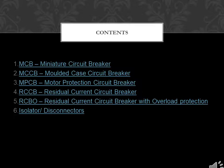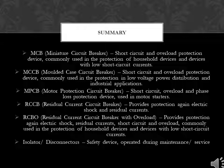Summary: MCB – Miniature Circuit Breaker – short circuit and overload protection device, commonly used in the protection of household devices and devices with low short circuit currents. MCCB – Molded Case Circuit Breaker – short circuit and overload protection device, commonly used in low voltage power distribution and industrial applications. MPCB – Motor Protection Circuit Breaker – short circuit, overload, and phase loss protection device, used in motor starters. RCCB – Residual Current Circuit Breaker – provides protection against electric shock and residual currents. RCBO – Residual Current Circuit Breaker with Overload – provides protection against electric shock, residual currents, short circuit, and overload, commonly used in protection of household devices. Isolators/Disconnectors – safety device, operated during maintenance/service.